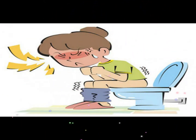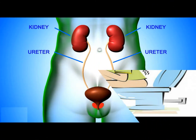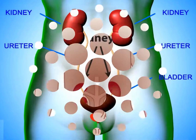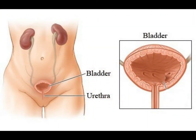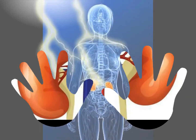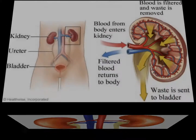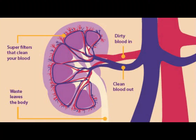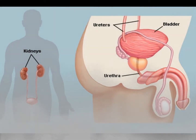When you go poo, solid waste is released. The main parts or organs of the excretory system are kidneys and bladder. You have two kidneys. Your kidneys filter liquid waste from your blood. The blood passes through your kidneys about 400 times every day. The kidneys make urine, which is stored in your bladder.